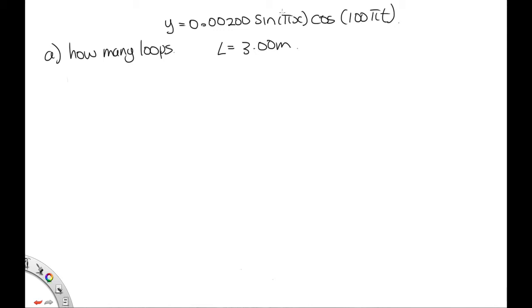So to work out the wavelength, we use k. k in this case is equal to pi, which is equal to 2 pi over lambda. So that tells us that lambda is equal to 2 pi on pi, which is equal to 2.00 meters.